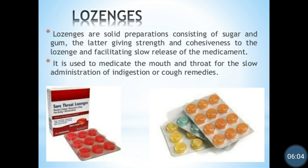These lozenges are used in the treatment of the mouth and throat. They are made up of sugar and types of gum, such as tragacanth gum and acacia. By mixing the sugar and gum, we can add drugs for topical treatment. The lozenges are harder than tablets and have a particular strength and cohesiveness. When we keep the lozenges in the mouth, they get dissolved slowly and release the drug slowly, forming a viscous liquid.